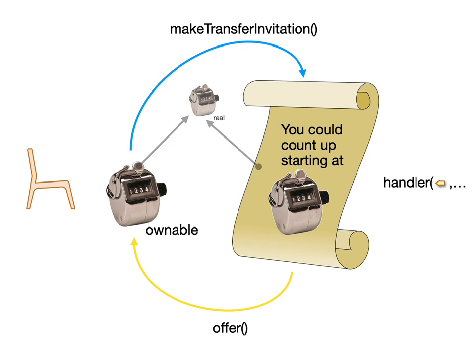The other thing to emphasize, bringing back to the visual language, is that by making an offer with an invitation, that participant also gets a seat for further participating in the contract — that's actually where seats come from in our framework. The handler that was invoked in making the offer got one of these seat resolver objects, providing the contract the ability to designate which party to change the allocation of in those atomic rearrangement messages.